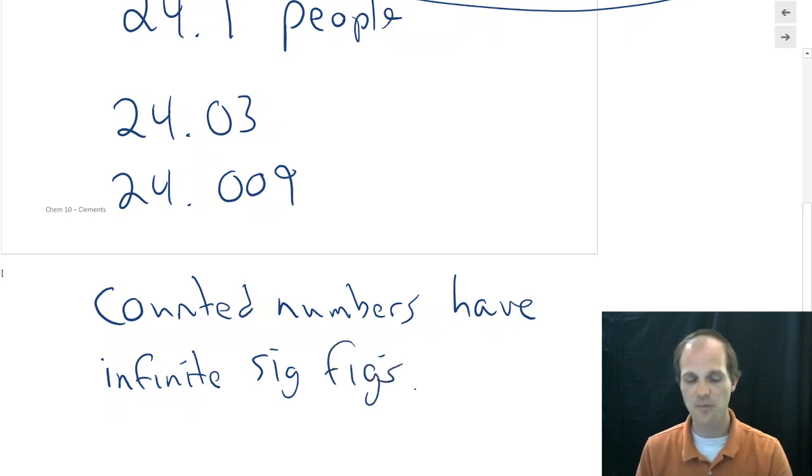No matter what digit I go past that 24, I know it's a zero. Because there's just 24 people in here because I counted them. And so they have infinite significant figures. And the effect that has is when we're doing math with them, we ignore the significant figures of counted numbers.